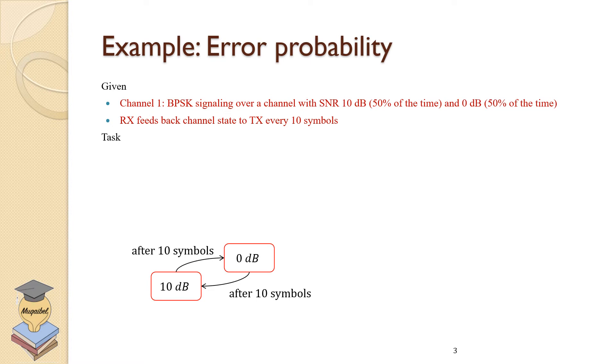Now, let's conclude with the following example. It says channel 1, we have binary phase shift keying signaling over a channel with signal-to-noise ratio 10 dB for 50% of the time, and 0 dB for 50% of the time. So this is the first time we deal with this. We have two different states. We have 10 dB, and then after 10 symbols, it changes. The receiver feeds back the channel state every 10 symbols. So what do we need to do? We need to draw a scatter plot that shows more or less to scale. In both conditions, we'd like to look at what is the bit error rate for both conditions and average bit error probability. And we'd like to see how do we improve the bit error rate.